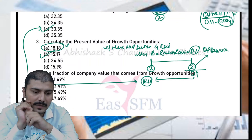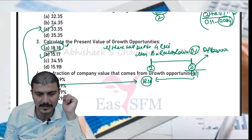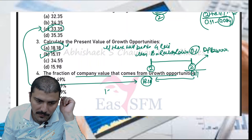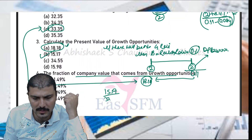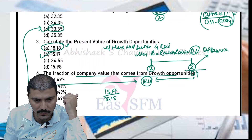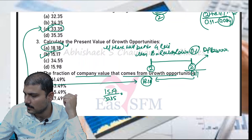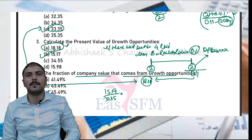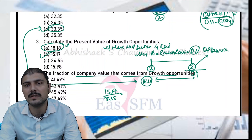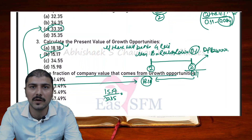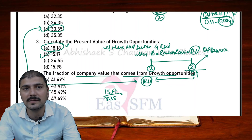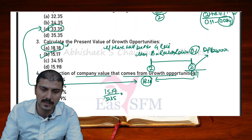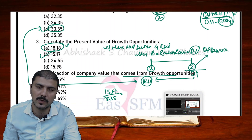The present value of growth opportunities is rupees 15.17. The last part asks for the fraction of company value attributable to growth opportunities: 15.17 / 33.35 = 45.49%. Please revise this topic carefully as PVGO is asked very frequently in exams. In the previous video, the compounded annual growth rate concept was discussed, which is also important for practical and case study questions. For any remaining doubts, you can contact me on my contact number.